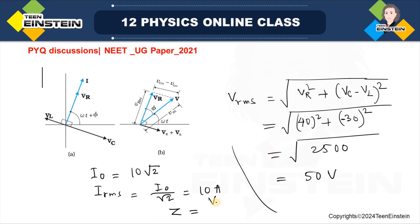So, from there we will write Z is equal to VRMS by IRMS. And if you do this calculation, what we will get? We will get 50 volt by 10 ampere which is 5 ohm.